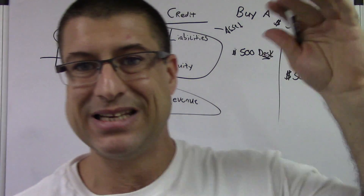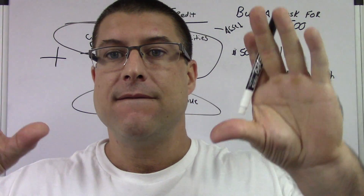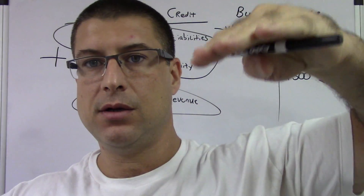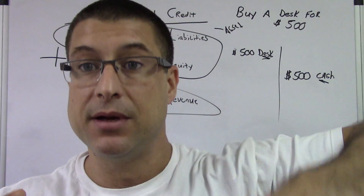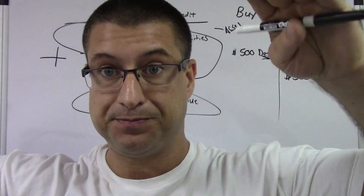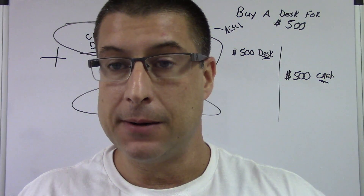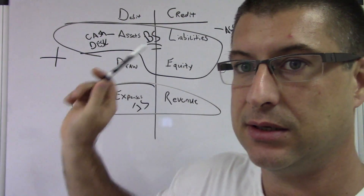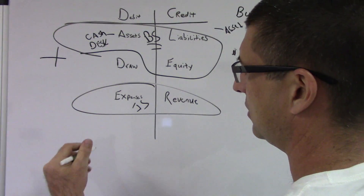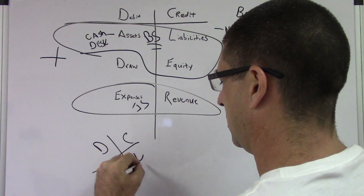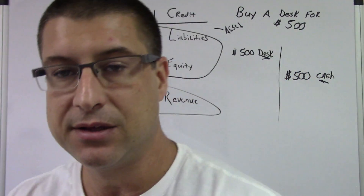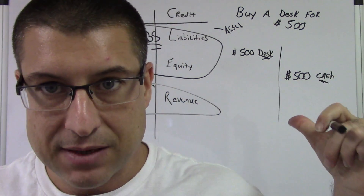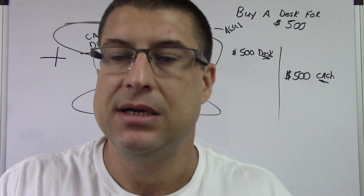Just to reiterate: debits are always going to equal credits — always. You can have 20 debits and one credit, or vice versa, but they always equal. It doesn't matter if this journal entry comprises only assets. DCALUR — which we always use — represents the positive sides. So in this example, the cash asset is leaving, so it's negative, and that's why it's a credit.